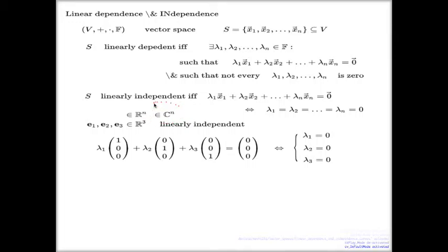So this is a simple example. Now I'll show you the typical example from the textbook - that's the example where we need to borrow our knowledge of the first semester. You will see this linkage, this connection with the row echelon forms and Gaussian elimination.